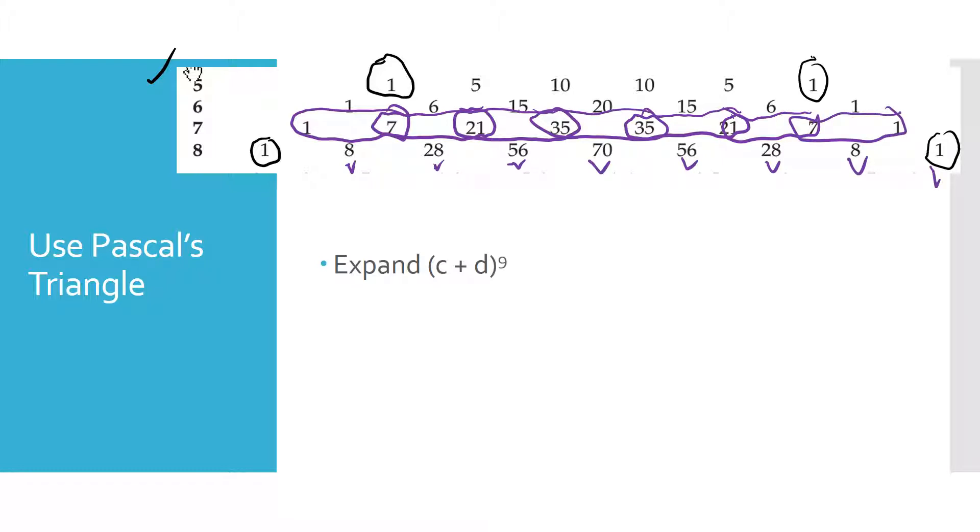In a few minutes, we're going to be looking at the binomial theorem, which we can use combinations, combinatory, to find these coefficients. But we're going to use Pascal's triangle in this example to expand C plus D to the 9th. Now, so I'm going to start,